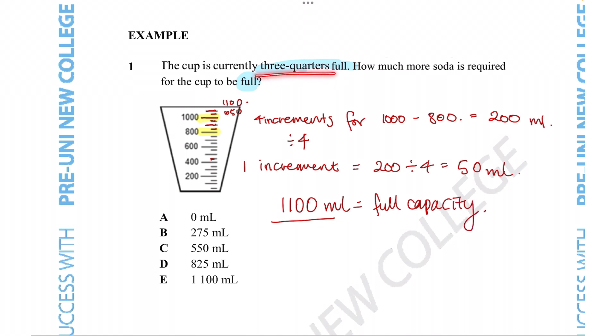We are told that the cup is currently three-quarters full. So let's figure that out. 1100 times by three over four, four goes into this number 225 times. 225 times by three gives us 825 milliliters. So that's the amount of water or whatever it is currently in the cup.